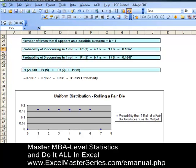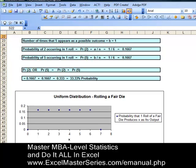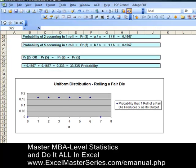The probability of 2 or 5 equals the probability of 2 plus the probability of 5. That equals 1/6 plus 1/6, which equals 1/3. So there's a 33% probability that either a 2 or a 5 will appear in one roll of a fair die.